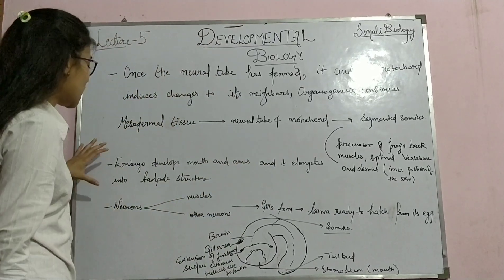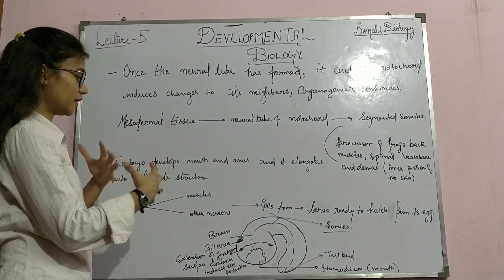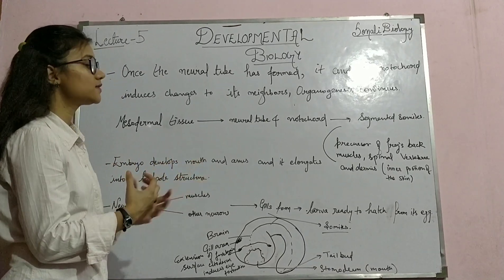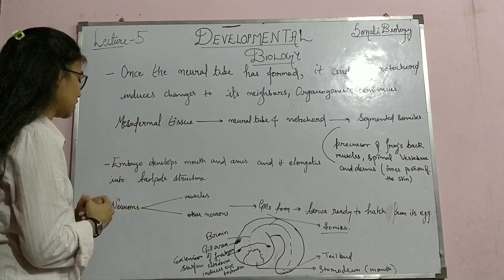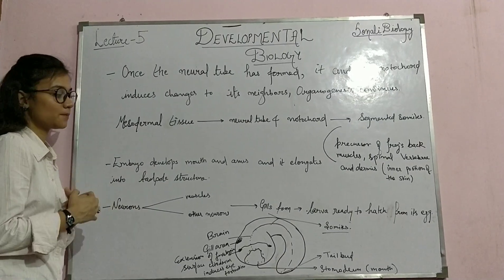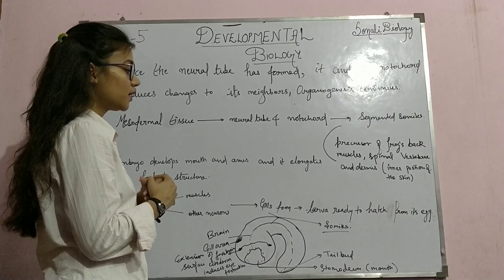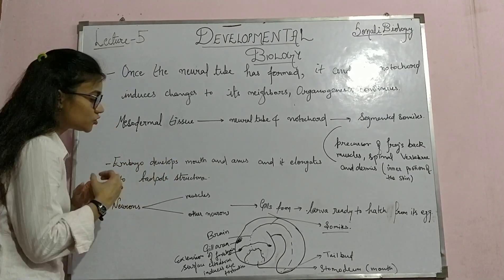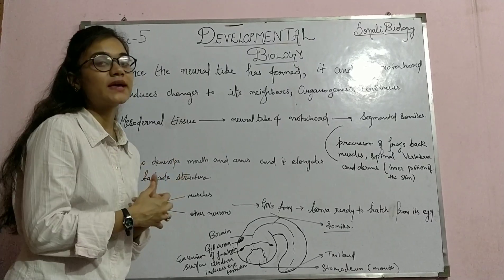The embryo will continue developing its mouth and anus, and it elongates further into a tadpole structure. After that, it will mature and hatch from its egg.